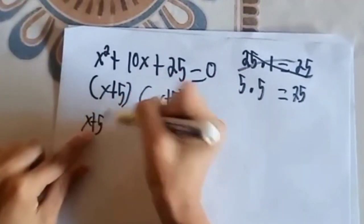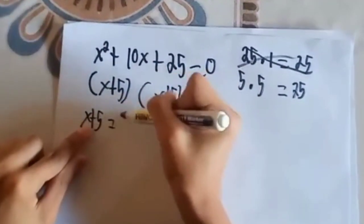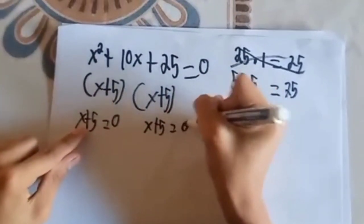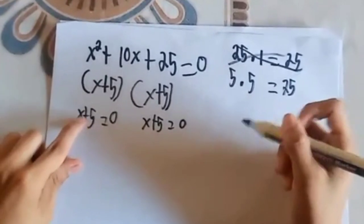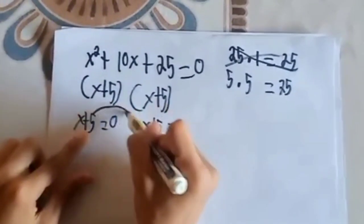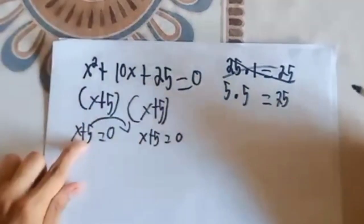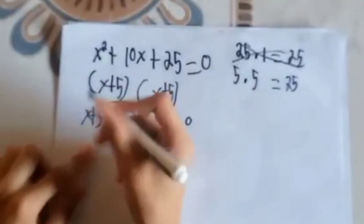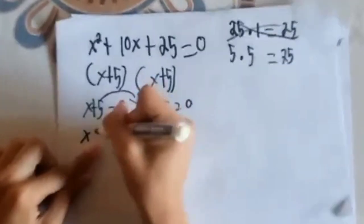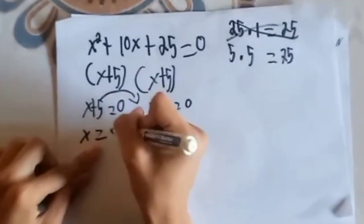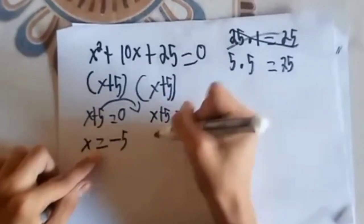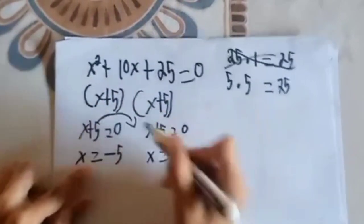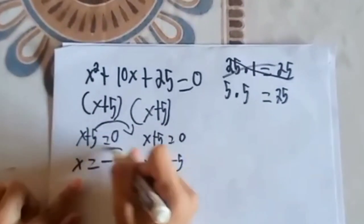X plus 5 equals 0. Ito pong 5 ay ilibad po natin sa 0, at ang opposite po ng positive 5 ay negative 5. Kaya ang gagawin po natin dyan ay X equals negative 5. Ito din po, X equals negative 5, at pag nauna po natin yung sagot, ayun na po yun.